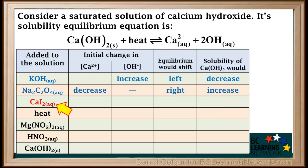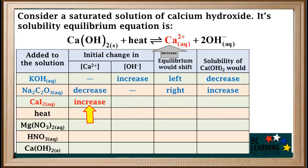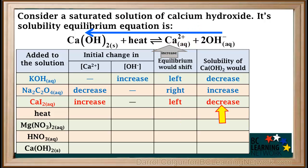Next we'll look at aqueous CaI₂. CaI₂ is soluble and dissociates into calcium and iodide ions. This would cause an initial increase in the concentration of Ca²⁺, with no initial change in the concentration of hydroxide ions. An initial increase in calcium ion concentration would cause the equilibrium to shift to the left, which would cause the solubility of calcium hydroxide to decrease. Remember, this is called the common ion effect — the low-solubility compound Ca(OH)₂ and the added salt CaI₂ have the Ca²⁺ ion in common.